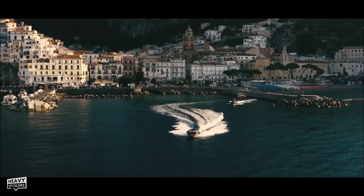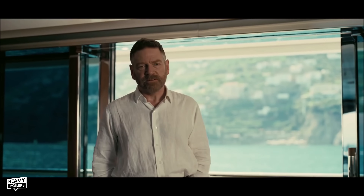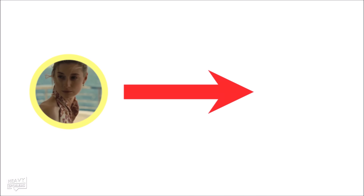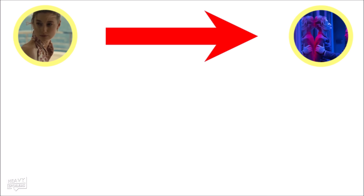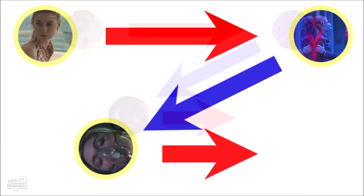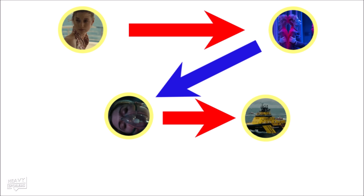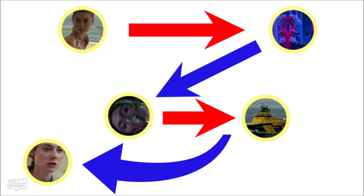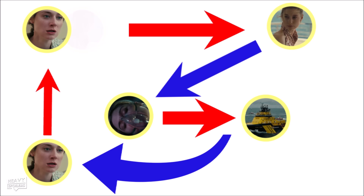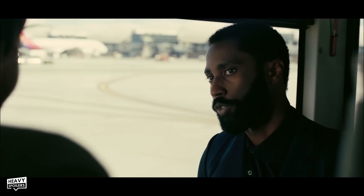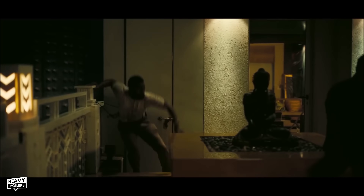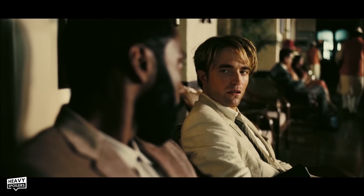Since my first Tenet video I've been getting a lot of requests to do a full timeline breakdown for all of the characters in the film. I've actually already made one for Kat and I'll leave that video linked above if you wanna check it out. Now you might not realise but she and Sator go on pretty much the exact same journey as far as inversions are concerned. Mirroring this, Neil and the protagonist go on very similar journeys and for the most part, bar a couple of scenes, they're on the same path.